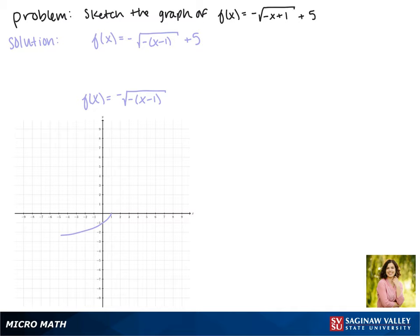And last, we have our vertical translation. Because we're adding 5 on the outside, this moves our function up 5 spaces, so that now it passes through the point.